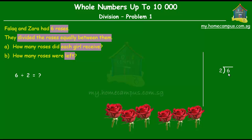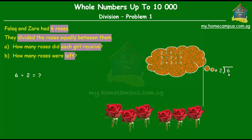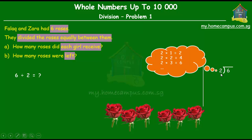Alright, now when you want to divide any number by two, what you actually do is you start by thinking of the multiplication table or the times table of two. Okay, so when the number over here is two, you think of the multiplication table of two. Now, two times one is two, two times two is four, two times three is six.